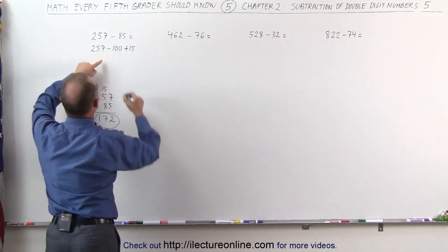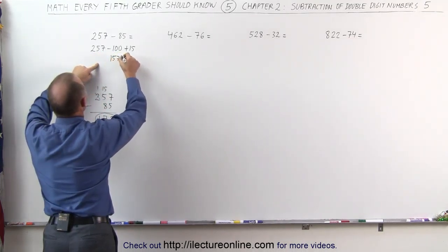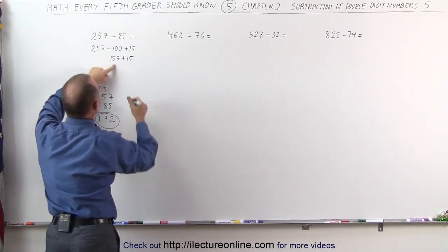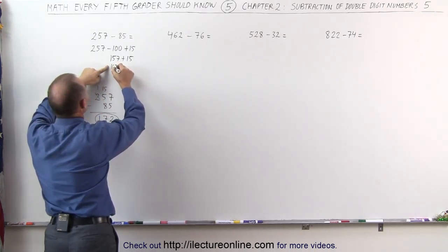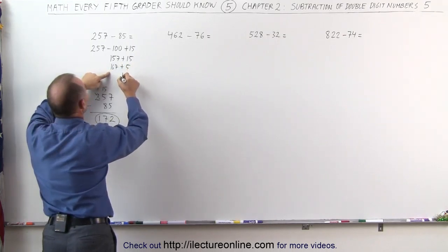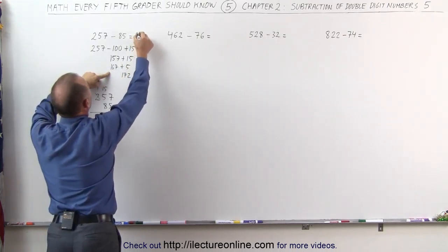257 minus 100 that gives me 157 plus 15. Well 157 plus 10 gives me 167, that's 167 plus 5. 5 plus 7 is 12, that becomes 172. And that is my answer.